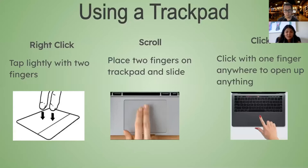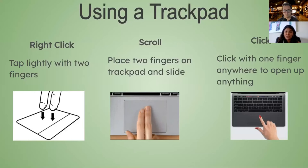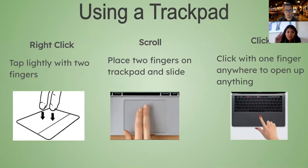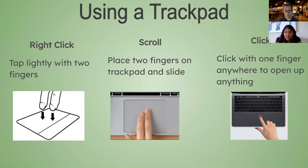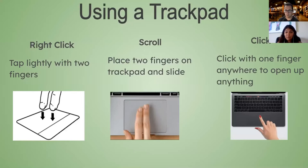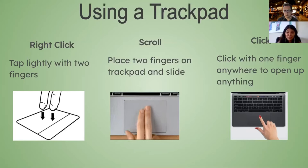Using the trackpad is very different from using a mouse. To right-click, take two fingers and lightly tap the trackpad — they can be together or spread apart. To scroll, put two fingers on the trackpad and gently slide them up or down. To regularly click, just tap with one finger. If you click with two fingers on the trackpad, you end up right-clicking.